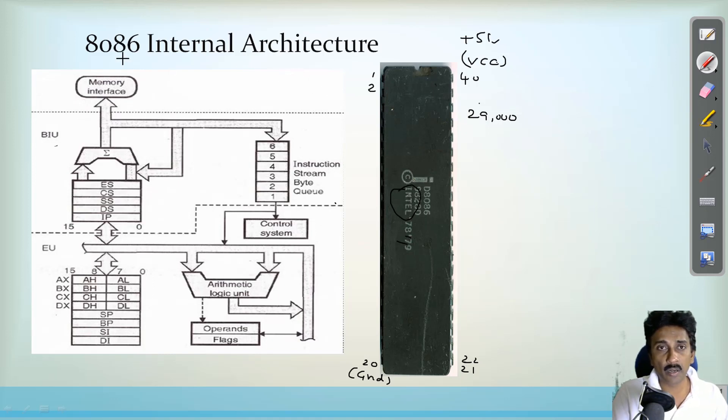Now today's topic is internal architecture of 8086. This 8086 comprises of two functional units. One is bus interface unit and second one is the execution unit. This is the entire microprocessor which is having two units.